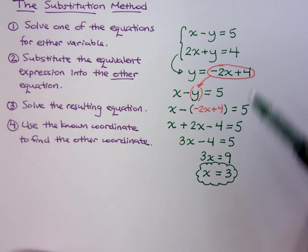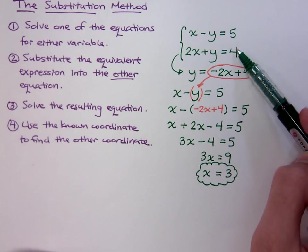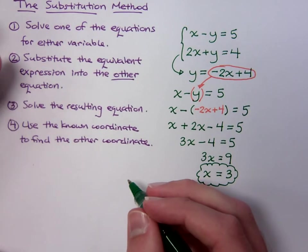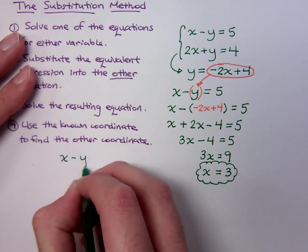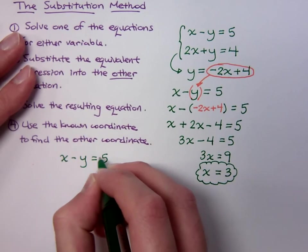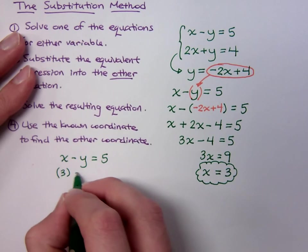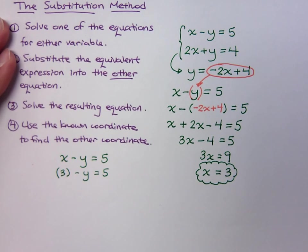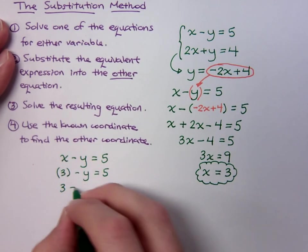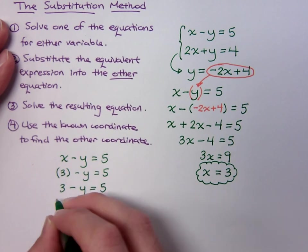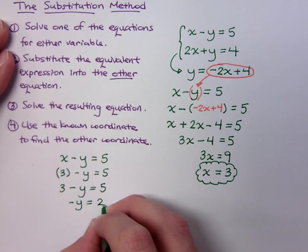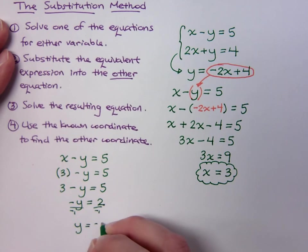It says use the known coordinate to find the other coordinate. Well, you plug it back into one of the original guys up here. It doesn't matter which one you plug it into. If I plug it into this first guy, here's what we have. So this was x minus y equals 5. I'm going to replace the x with 3, and then I have an equation to solve. I'm going to get y by itself. So this is 3 minus y equals 5. Subtract the 3 over. Negative y equals positive 2. Then divide both sides by negative 1. And y equals negative 2.